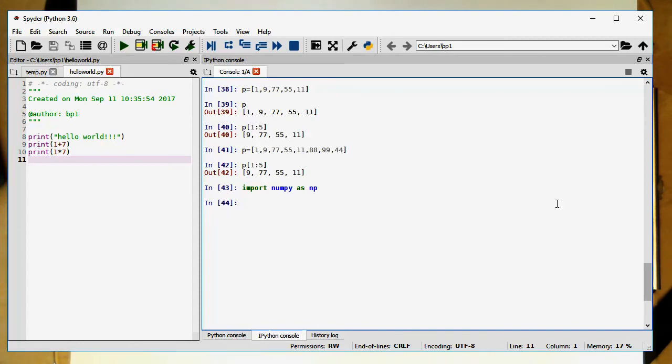Now we have NumPy there. If we write now numpy.array of 1, 5, 2, and 6, for example, then we see it's generating us a numpy array here. We can also save that into this variable a here.